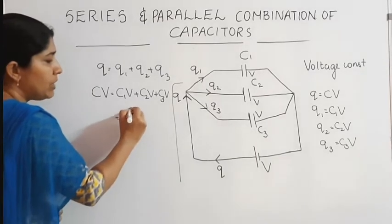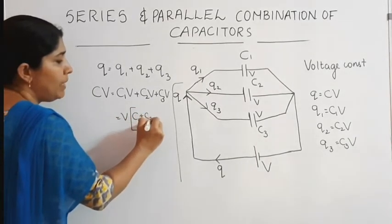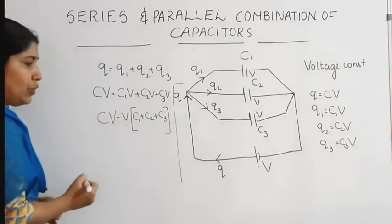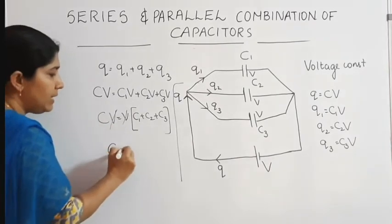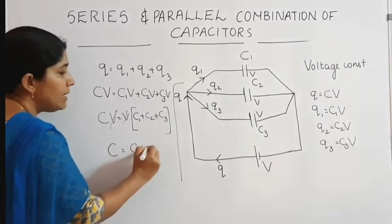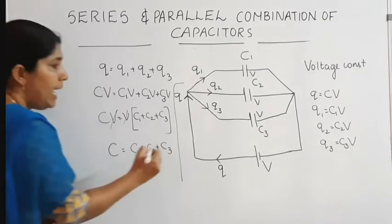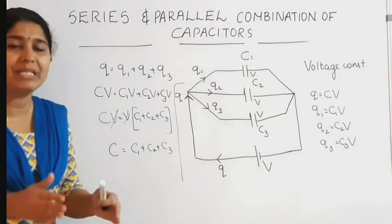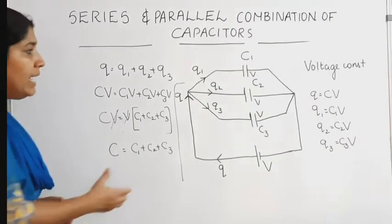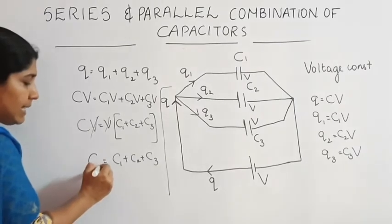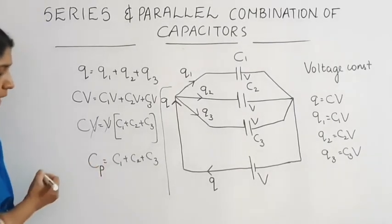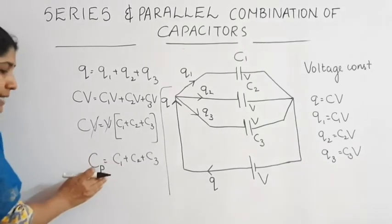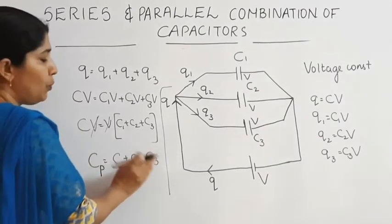Since voltage remains constant, V is taken outside: CV equals (C1 plus C2 plus C3) times V. V gets cancelled, therefore C equals C1 plus C2 plus C3. In parallel combination, the effective capacitance Cp equals C1 plus C2 plus C3.